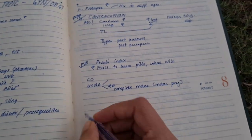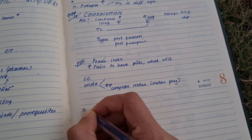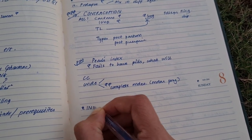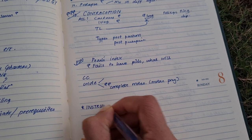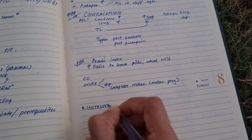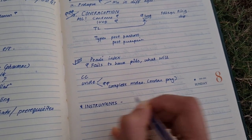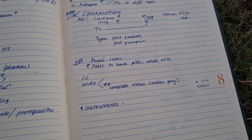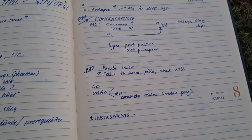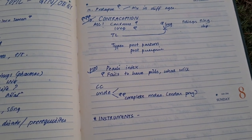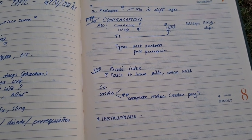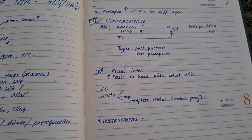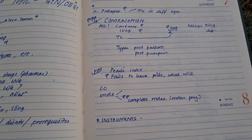Last and most important are the instruments. This instrument section is there in most standard books in the last pages section of the book. You should know all the different kinds of instruments.